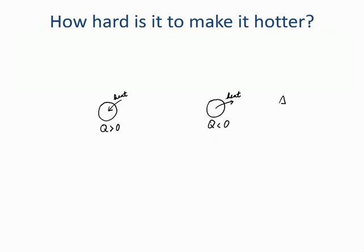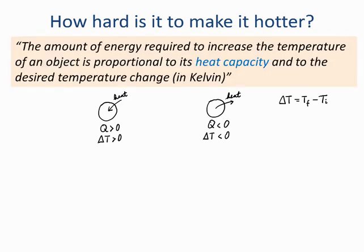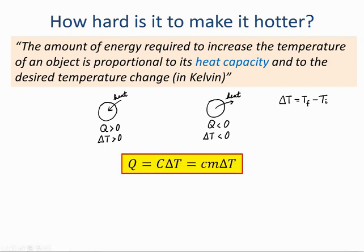If we define delta T as final temperature minus initial temperature, then in the first case we'll have a positive delta T, and in the second case a negative delta T. This means that mathematically the heat exchanged between the object and the surroundings has the same sign as the temperature change for the object. The amount of energy required to increase the temperature is proportional to the heat capacity and to the desired temperature change in Kelvin, so q must be proportional to delta T. The proportionality constant is called heat capacity.